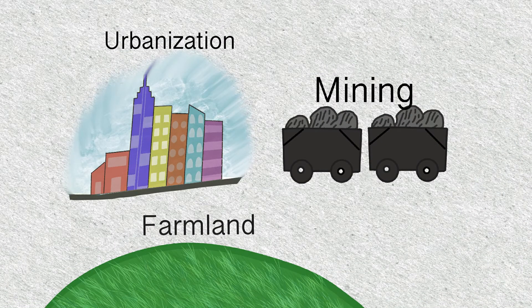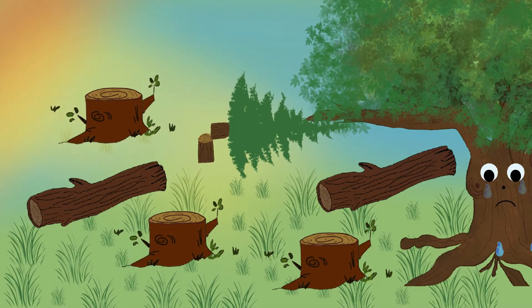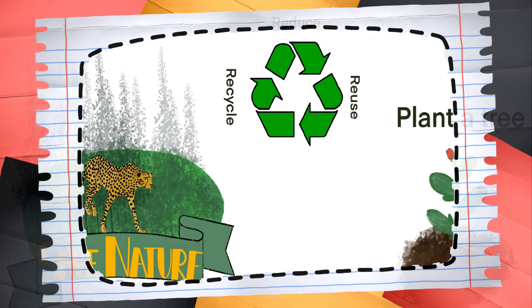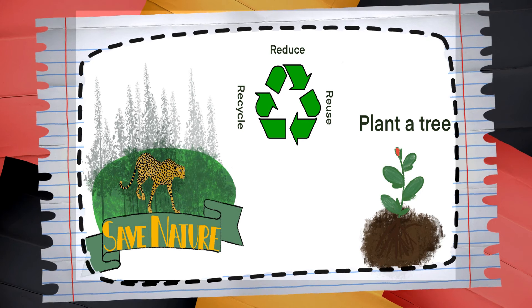Unfortunately, urbanization, mining activities, and converting forests into farmland are killing off much of the world's rainforests. We should contribute towards conservation of the rainforests by recycling, planting trees, supporting parks to protect wildlife, and educating people.